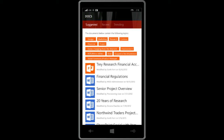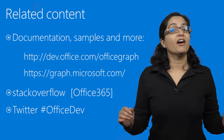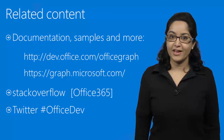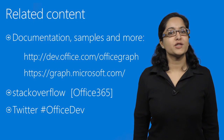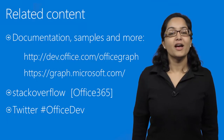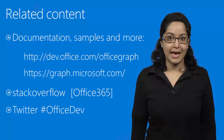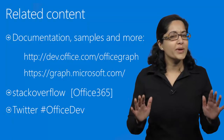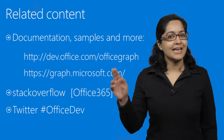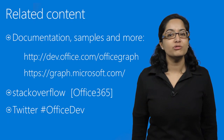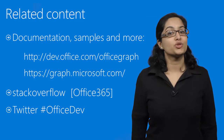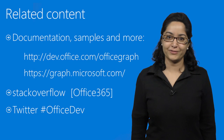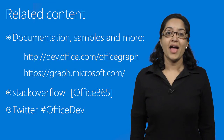We think this is very cool, and you can download and try the MyWorld app for yourself from the Windows Store. To learn more about this and other partner solutions built on the Office Graph, head to dev.office.com/OfficeGraph. For Office Graph API documentation, samples, and more, see graph.microsoft.com. You can always ask us questions on Stack Overflow by tagging them with Office 365. And do tell us about the apps you are building by posting to Twitter with hashtag OfficeDev. Thank you for watching this video, and happy coding!